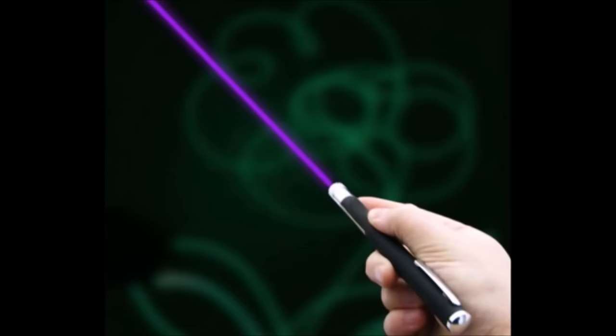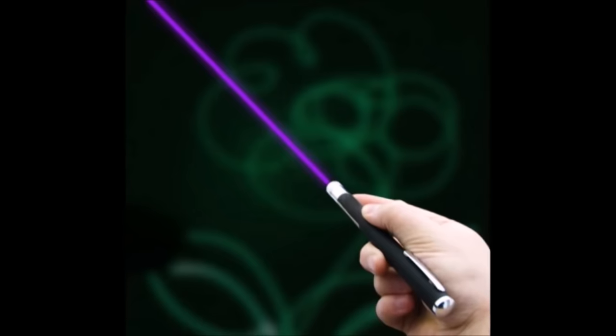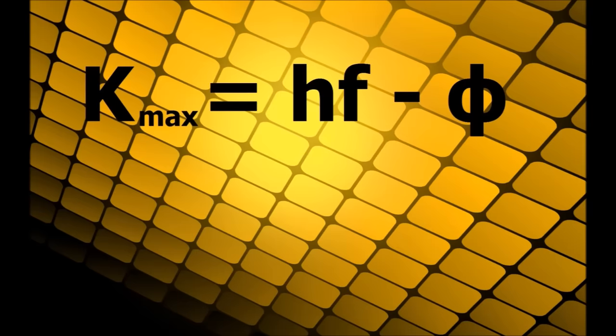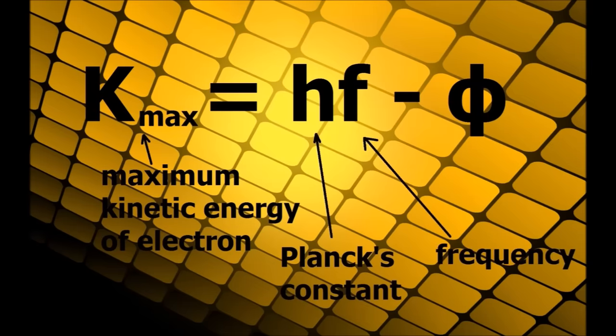You could have a beam of red light shining from a spotlight, and it will never release a single electron from the metal no matter how long you shine it on there. Then you could have a beam of violet light shining out of a little laser pointer, and the metal will immediately start shooting out electrons. From all this information, Einstein found that the maximum kinetic energy of each photoelectron, k max, equals hf minus phi, where k max is the maximum energy of an outgoing photoelectron, h is Planck's constant, f is the frequency of the light beam, and phi is the work function, which again depends on the material being illuminated.